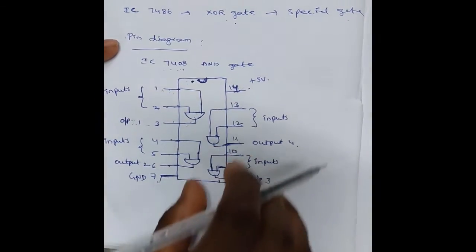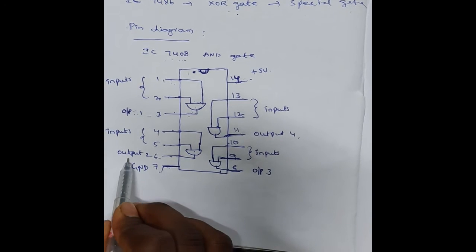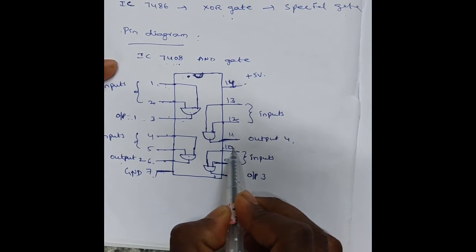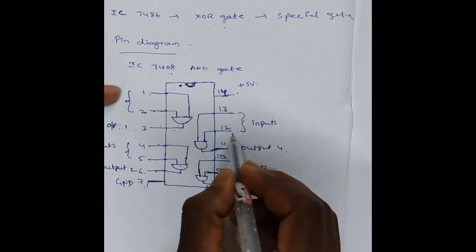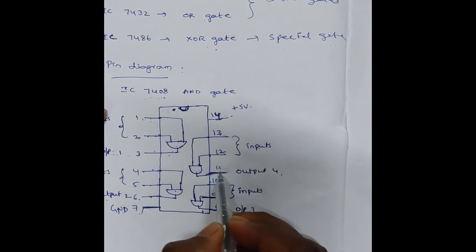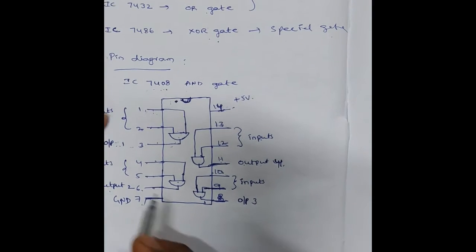This IC contains 4 AND gates total. Pins 4 and 5 are the inputs and pin 6 is the output. Pins 9 and 10 are the inputs and pin 8 is the output. Similarly, pins 13 and 12 are the inputs and pin 11 is the output for AND gate 4.